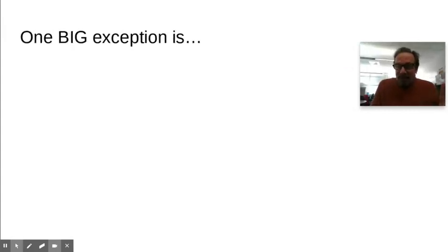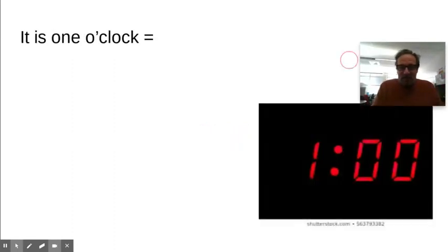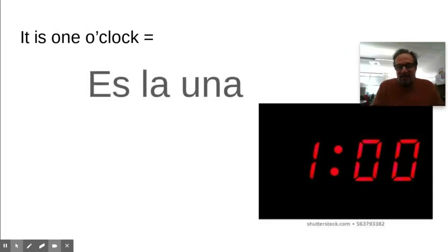Except for one big exception. One. The one big exception is one. Don't say son las for one. Say es la. Because one is singular. So, it's es la, not son las. Es la una. Son las dos. But es la una. That's the one big exception.